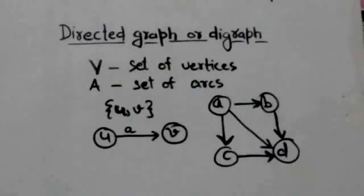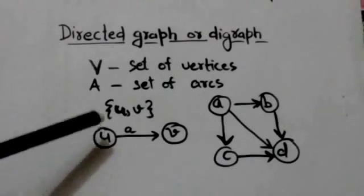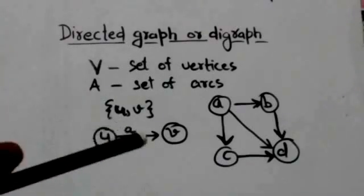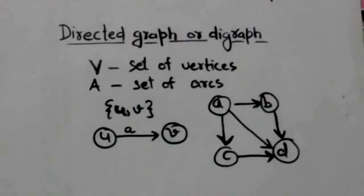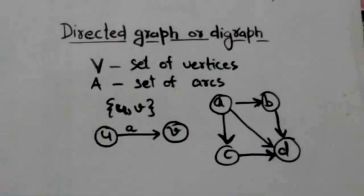A directed graph or digraph consists of a finite set V of vertices and a set A of ordered pairs of distinct vertices called arcs. If an ordered pair UV is an arc A, then we can say that arc A is directed from U to V. Here, arc A is adjacent from vertex U and is adjacent to vertex V. Thank you very much.